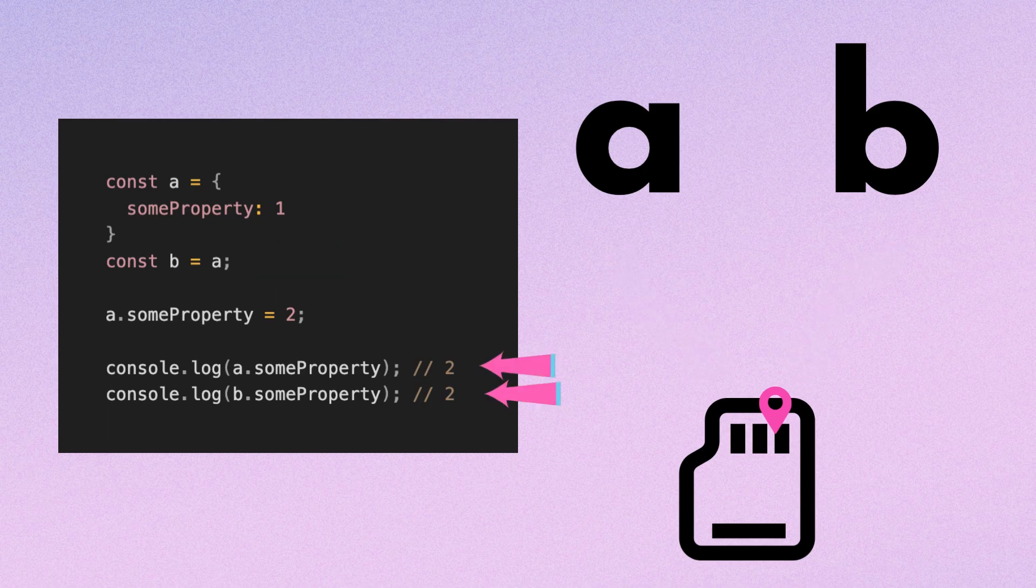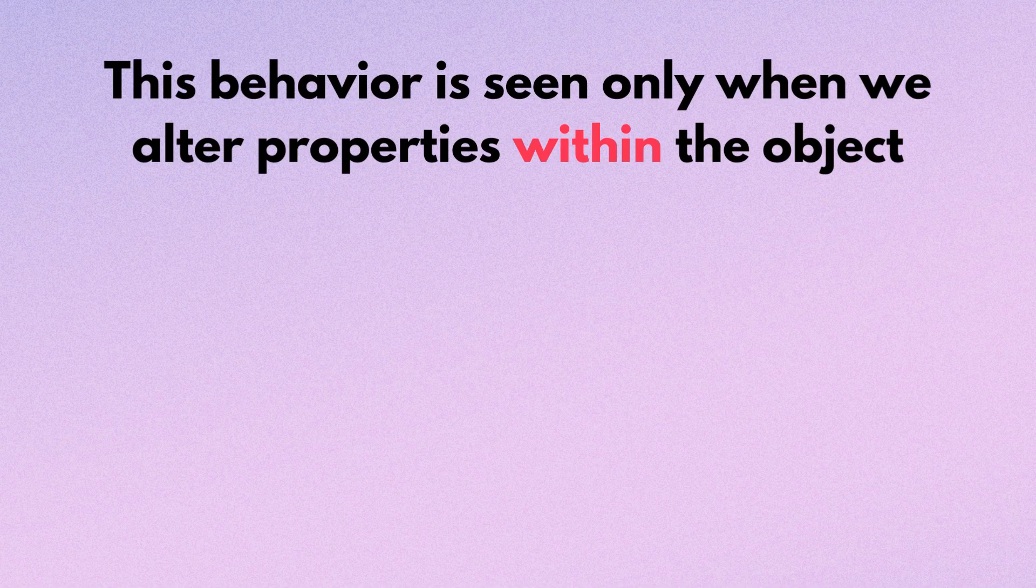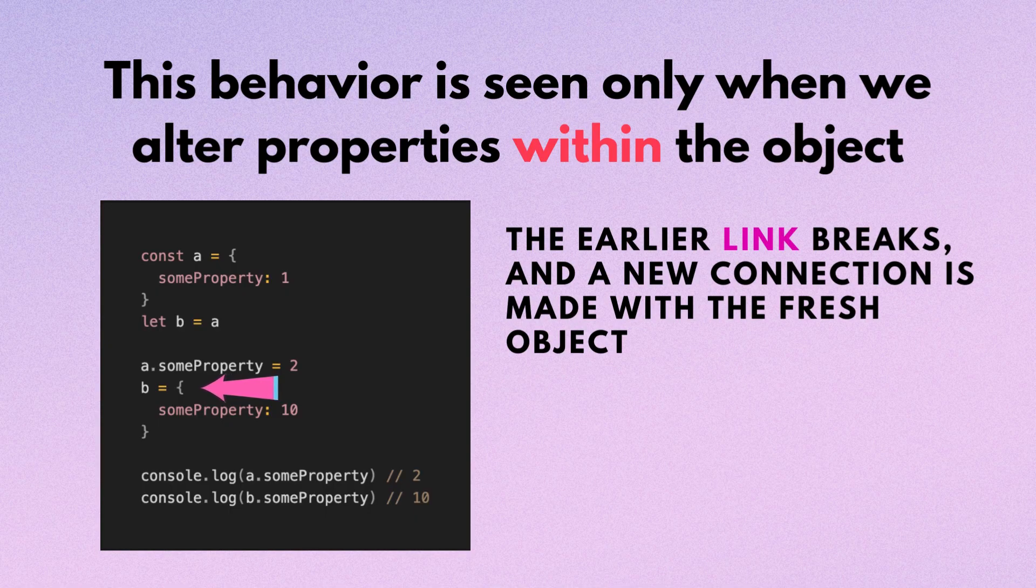However, it's crucial to understand this behavior is seen only when we alter properties within the object. If we reassign the entire object like so, the earlier link breaks and a new connection is made with the fresh object. Now variables a and b are independent.